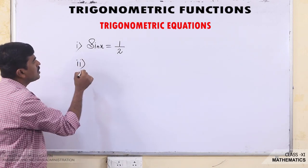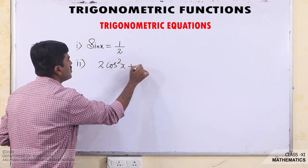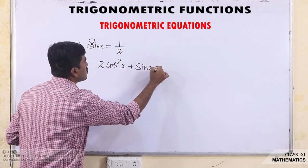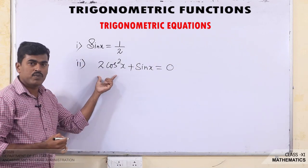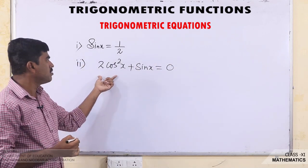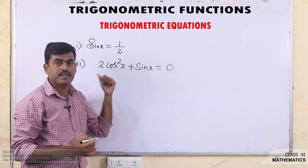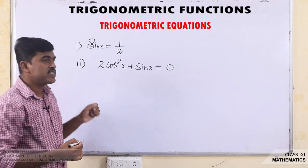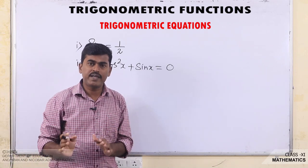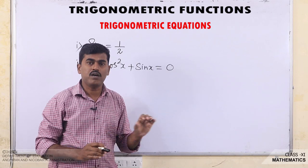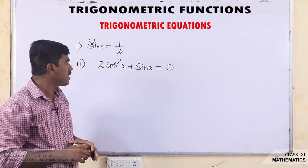Another example: 2cos²x + sin x = 0. This is also a Trigonometric equation because this equation involves Trigonometric functions and variable x. A Trigonometric equation is an equation involving Trigonometric functions of a variable — the variable may be x or theta, any variable we can take.